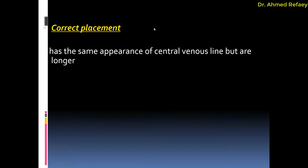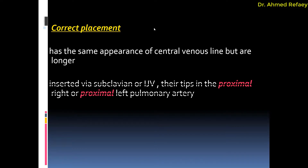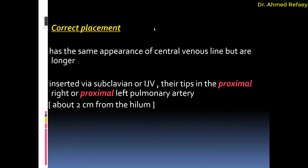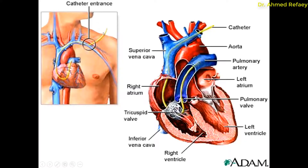Regarding correct placement of a Swan-Ganz or pulmonary artery catheter: it has the same appearance as a central venous line but is longer. The catheter passes through the right atrium and through the right ventricle, and the tip is located either in the proximal right or proximal left pulmonary artery, about two centimeters from the hilum. As you see in this image, the catheter is inserted through the left subclavian vein, going to the left brachiocephalic vein, superior vena cava, right atrium, through the tricuspid valve to the right ventricle, then to the pulmonary trunk, with its tip in the proximal part of the left pulmonary artery.